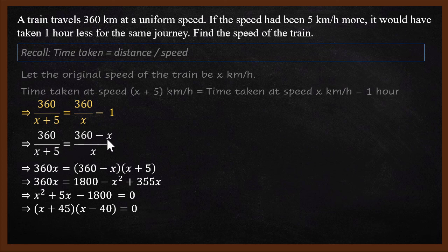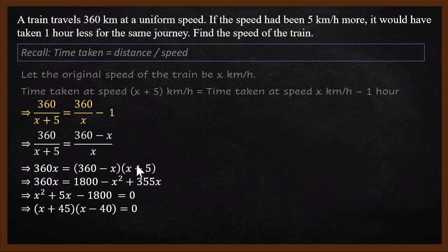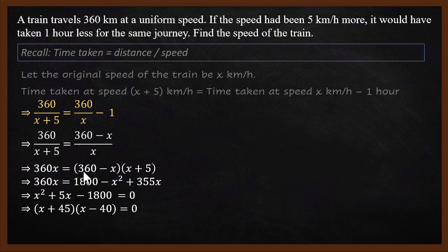We take x+5 and push it to the right hand side, so we get (360 − x) multiplied by (x+5). One way to think of it: multiply both sides by x(x+5). So 360x is on one side, and (360 − x)(x+5) is on the other. Expanding: 360 times 5 is 1800, minus x times x is minus x², and 360x minus 5x gives 355x.